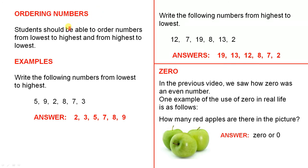Ordering numbers. Students should be able to order numbers from lowest to highest and from highest to lowest. Examples. Write the following numbers from lowest to highest. So we have 5, 9, 2, 8, 7, 3. So we have to do this systematically and very carefully.